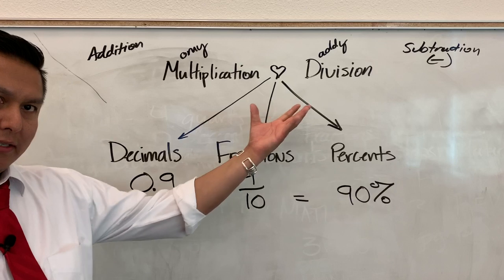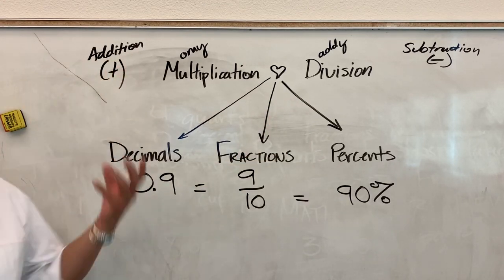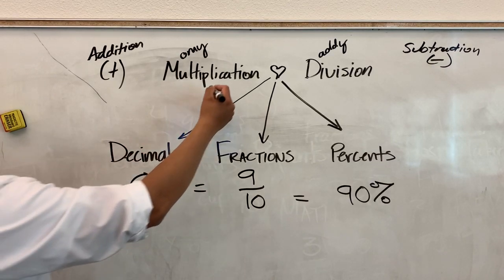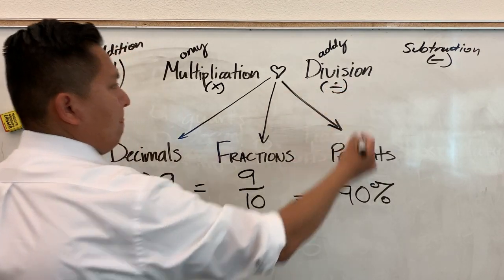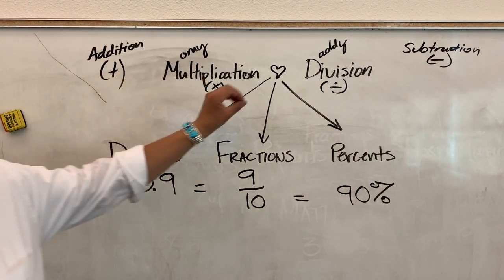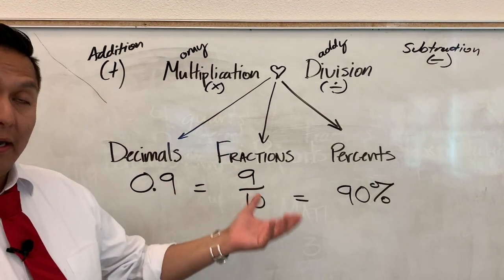Subtraction is very closely related to division. Addition is very closely related to multiplication. So throwing in the signs there. Now with these four operators, we want to understand how they're related to percents, fractions, decimals.